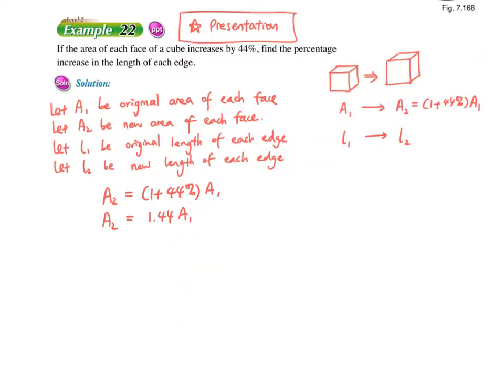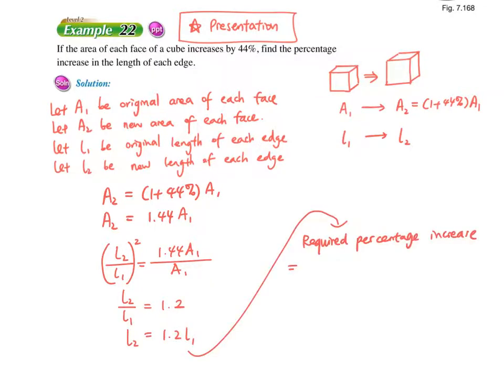Then we can start calculating. First, we write the relationship between A2 and A1. A2 is equal to 1.44 A1. And then we match the two corresponding parts. It means L2 over L1 equals to 1.44 A1 over A1. However, you have to match the dimension. So we square up the left hand side. So we can take the square root on both sides, and then you will get 1.2 on the right hand side. It means L2 equals to 1.2 L1. Finally, we can find the required percentage increase, which is the new length minus original length over original length. And you can simplify the L1, and then the answer will be 20%. So for this question, it's not really hard, but we have to note the presentation.